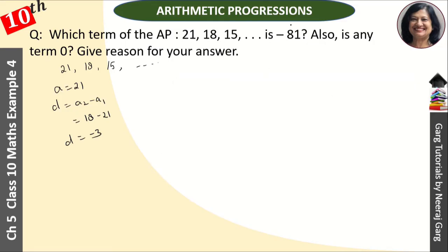And we have minus 81 given. This is our AN, minus 81. And the question asks which term - which term is minus 81? We need to find N. The formula is an = a + (n-1)d.